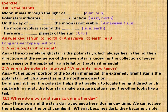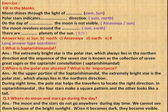Where do the moon and stars go during the day? The moon and stars do not go anywhere during the daytime. We cannot see them because of the bright sunlight. When it becomes dark, they become visible.